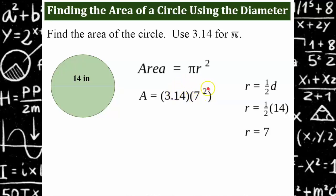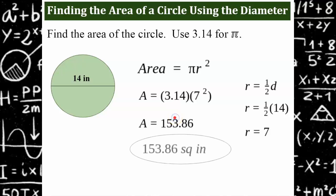Once again, you're calculating the exponent part of the expression first. 7 times 7 is 49, multiplied by 3.14 gives 153.86. The units here are square inches. I do not round a solution unless the problem asks me to.